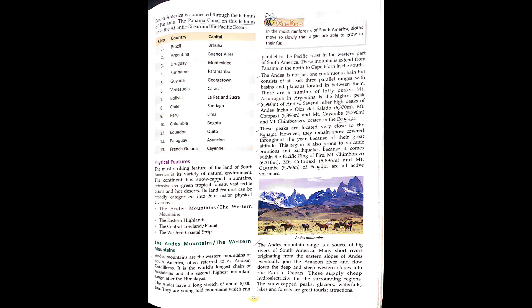This region is also prone to volcanic eruptions and earthquakes as it falls within the Pacific Ring of Fire. Mount Chimborazo (6,310 m), Mount Cotopaxi (5,896 m) and Mount Cumbal (5,790 m) are also active volcanoes. The Andes Mountains are a source of big rivers of South America. Many rivers from the eastern slopes of the Andes eventually join the Amazon River, while rivers from the western slopes flow into the Pacific Ocean. The snow-capped peaks, glaciers, waterfalls, lakes and forests are the greatest tourist attractions.